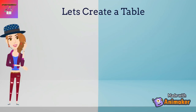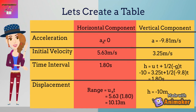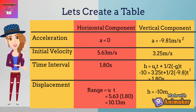Now create a table with x and y components. To find the time, only the y-axis is involved. Use h equals ut plus one-half at², where u equals 3.25 m/s. Substituting values gives the time, which is the same for the x-axis. Once you find the time, use the range formula: range equals ut, involving only the x-axis, and you get a range of 10.1 metres.